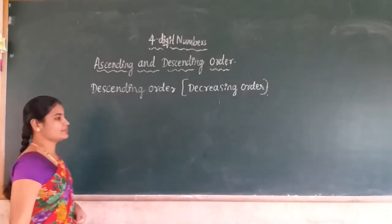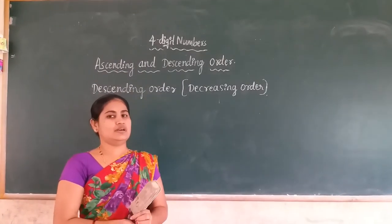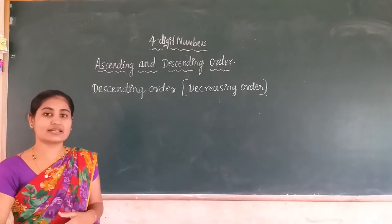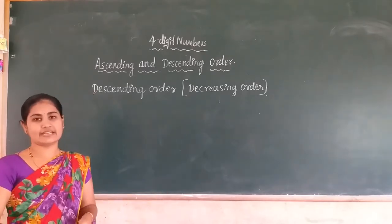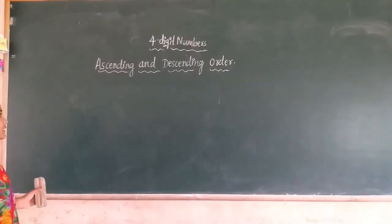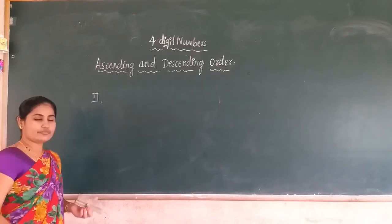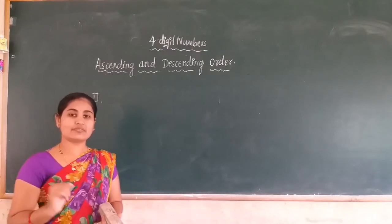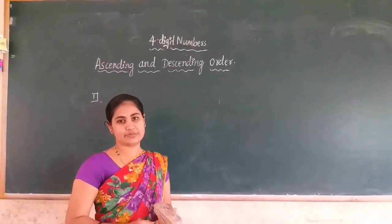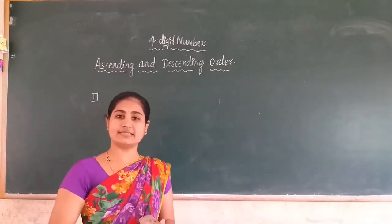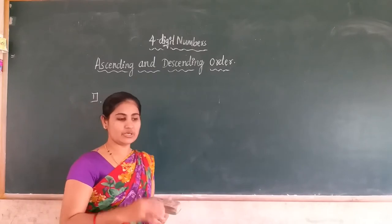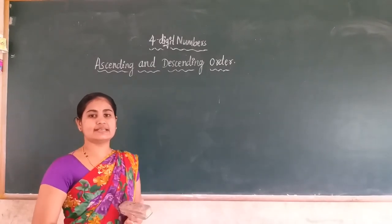Dear students, in some examples the number of digits is the same. How do we find the arrangement of numbers in ascending and descending order? I will give some tricks. The first trick is: observe the number of digits present in each number in the given series. Which number has more digits? That number is the greatest number.